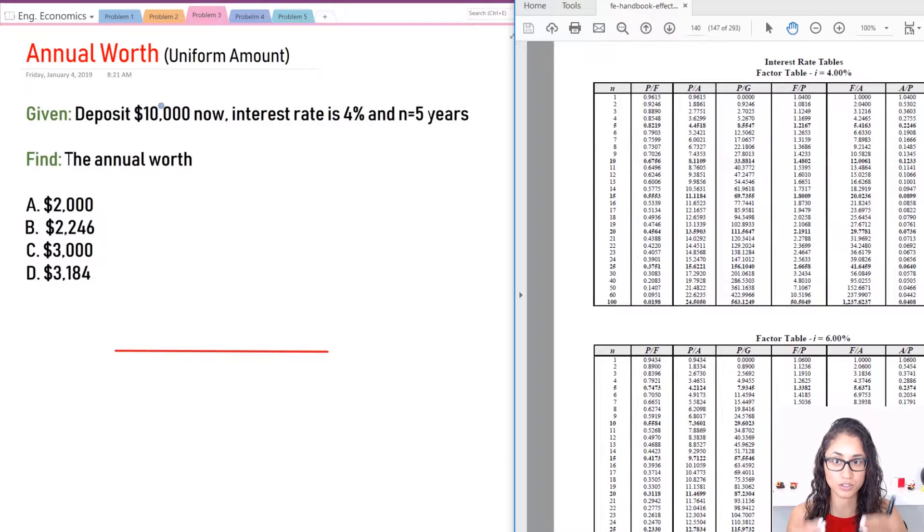So the question we have is, you deposit $10,000 today with an interest rate of 4% and in five years we want to know what's the annual worth. What's the annual worth every year for that $10,000 that you deposit today?